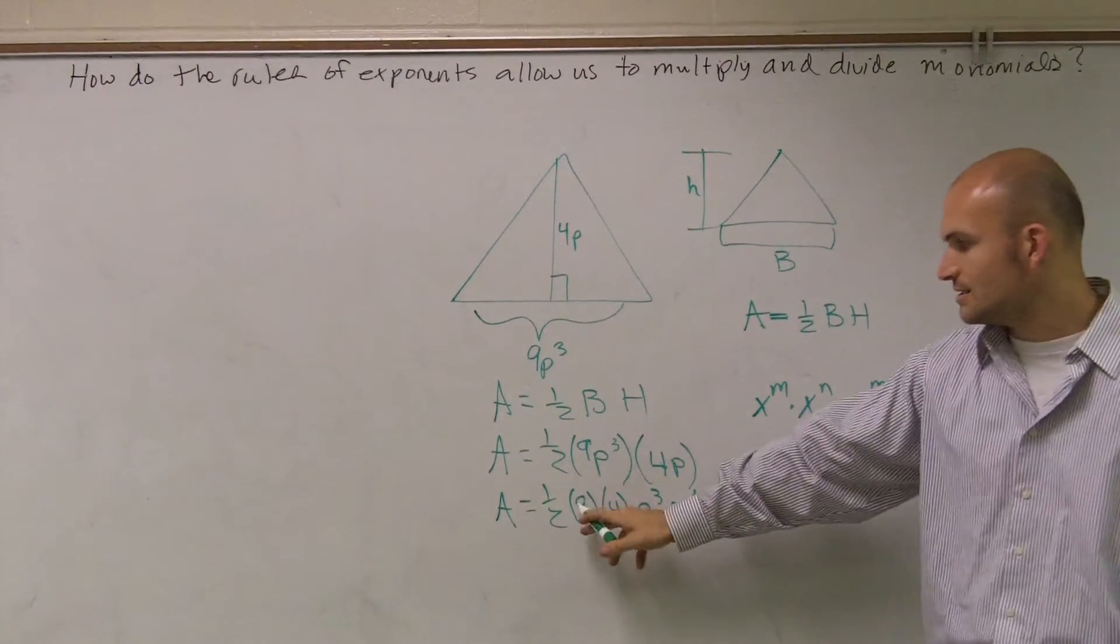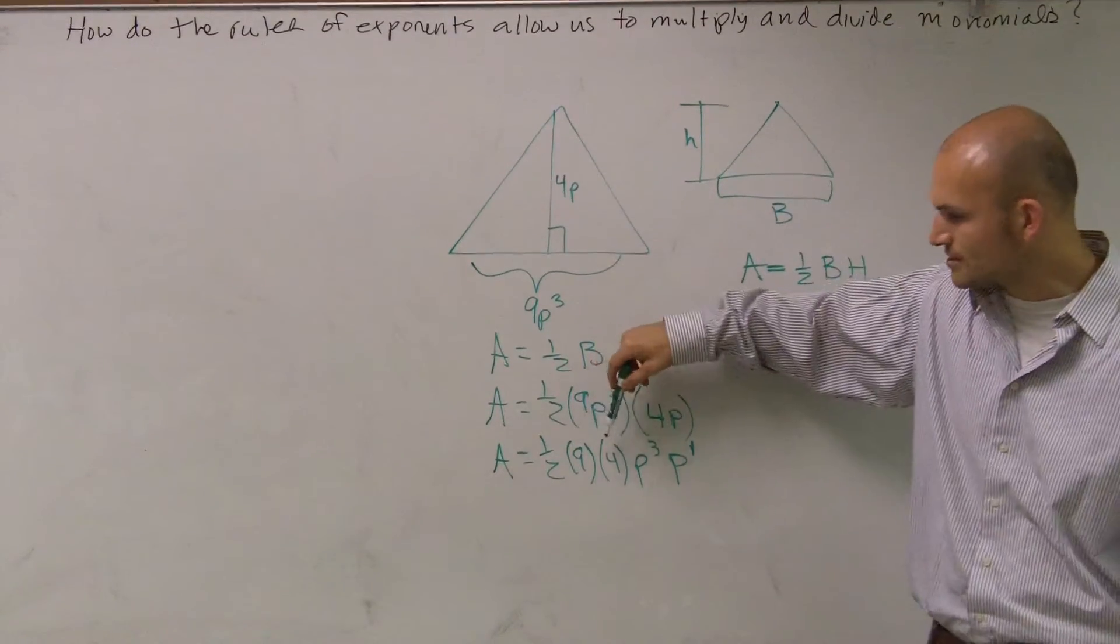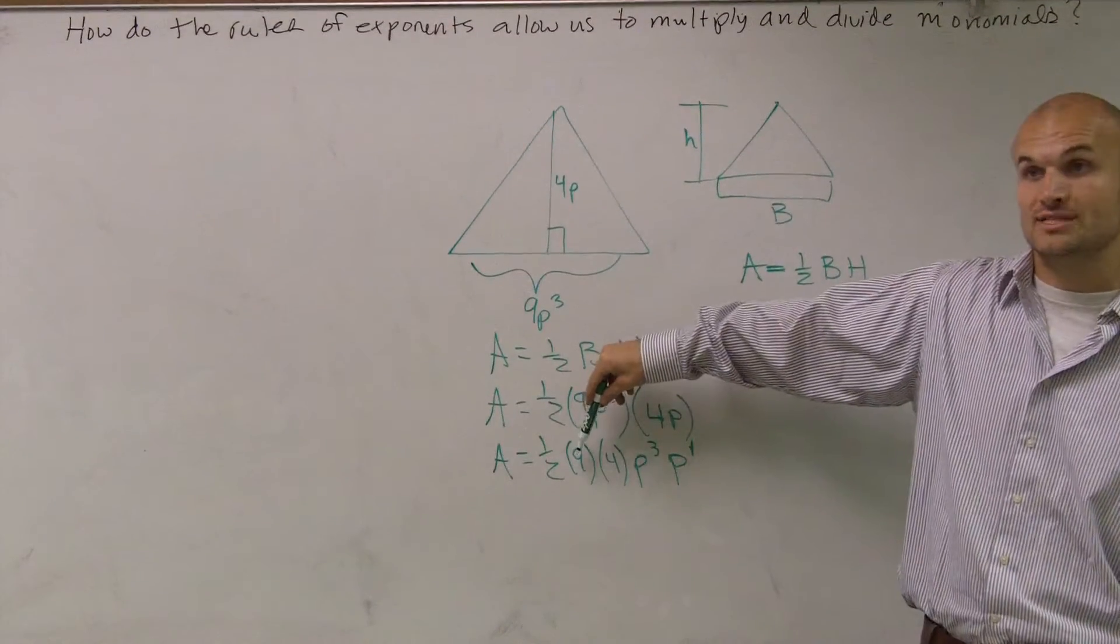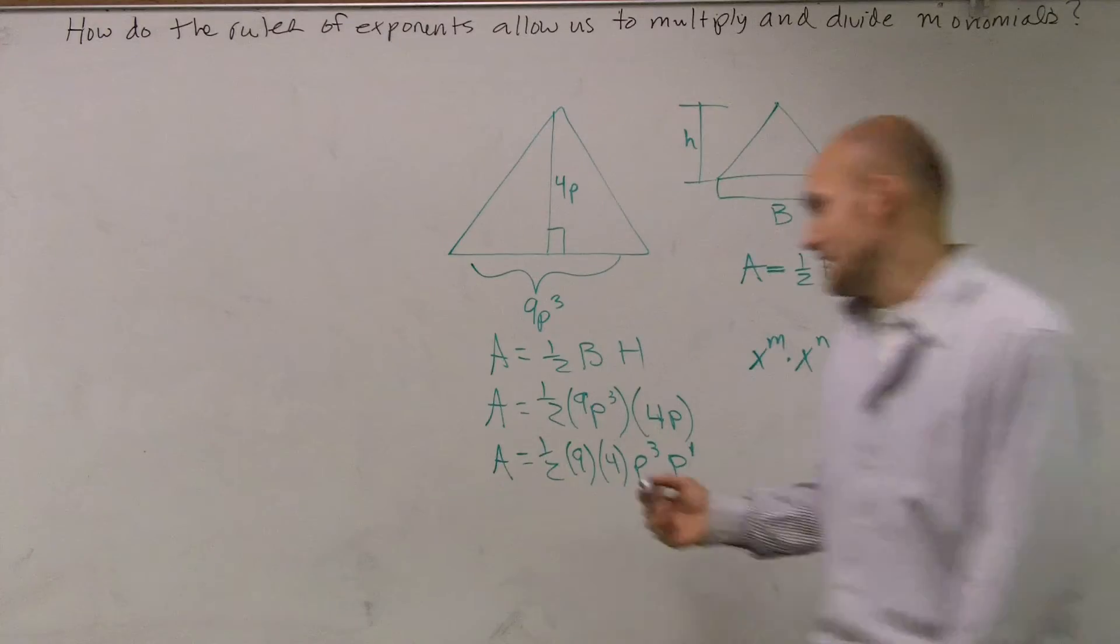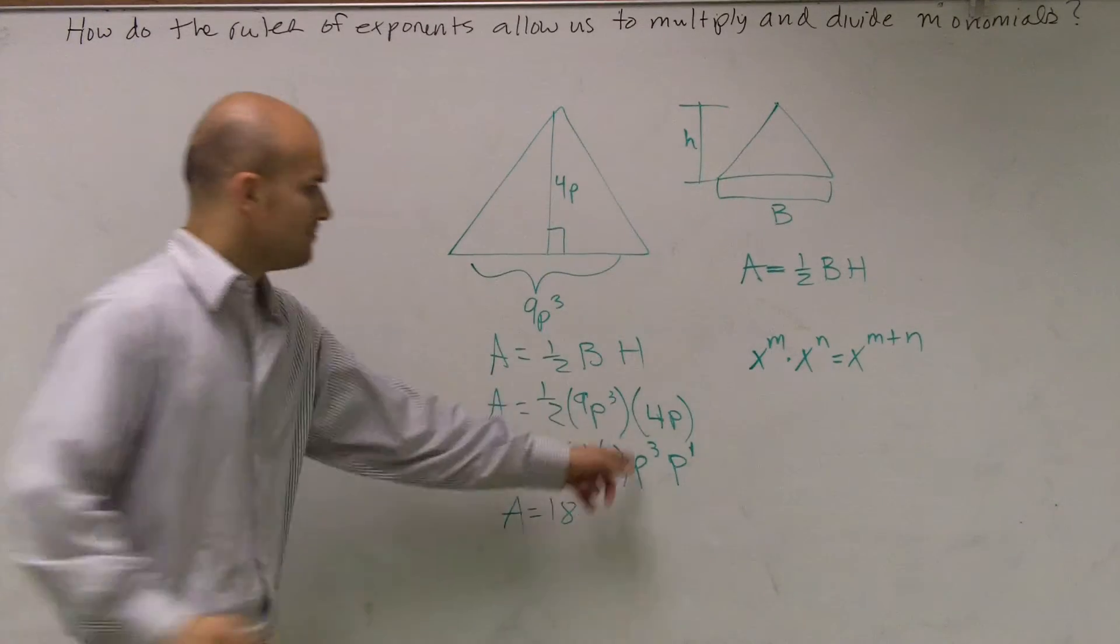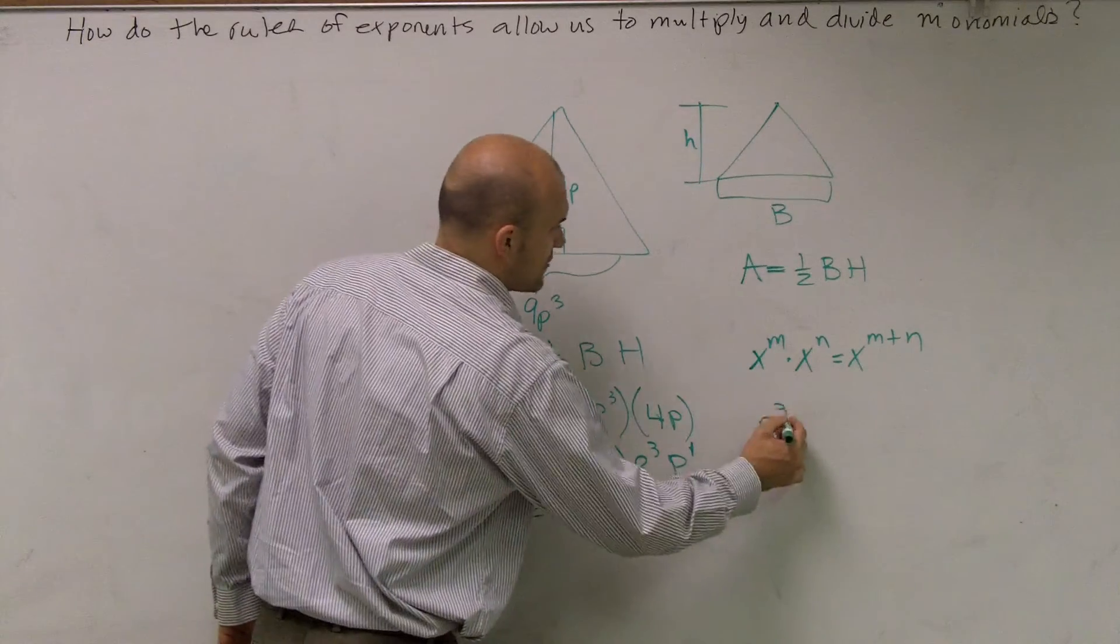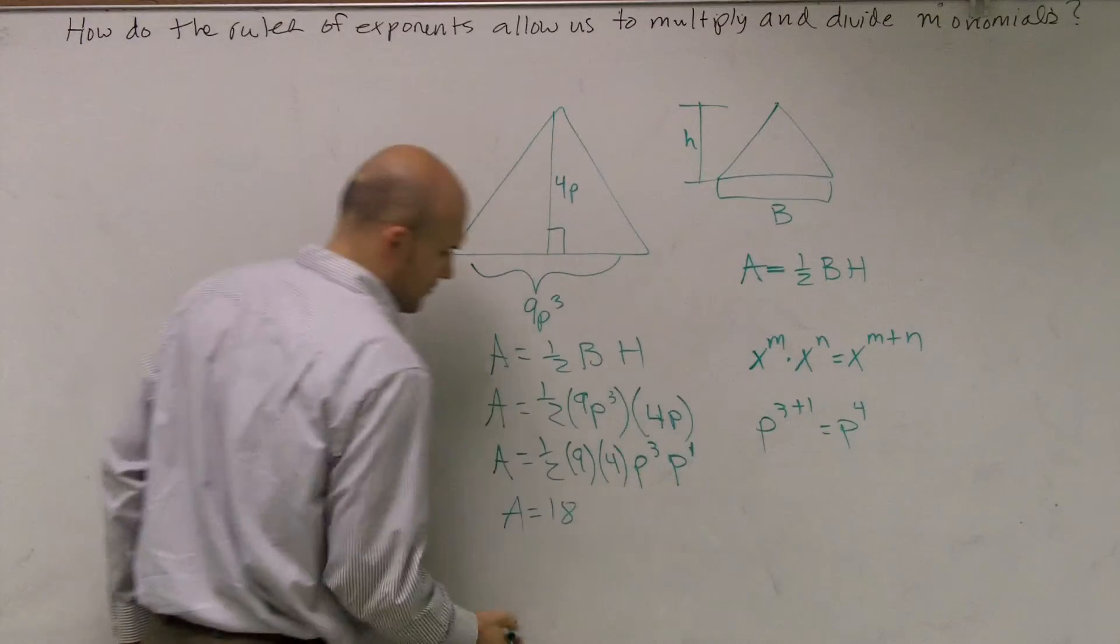So what is one-half times 9 times 4? Well, that might be a little difficult. So what I would do is 4 times 9 is 36 times one-half, which gives me 18. And p cubed times p to the first is going to be p to the 3 plus 1, which equals p to the fourth.